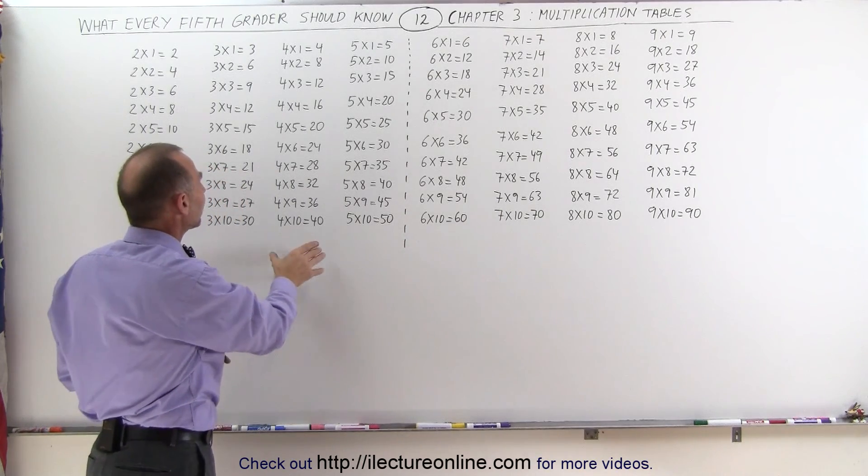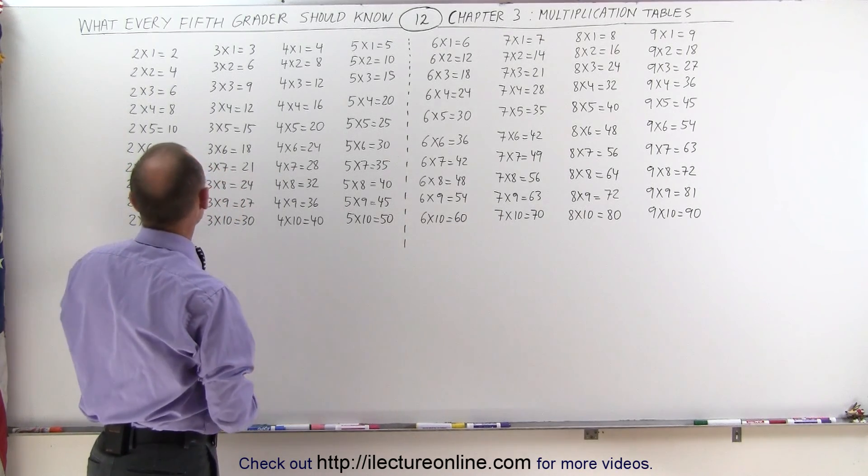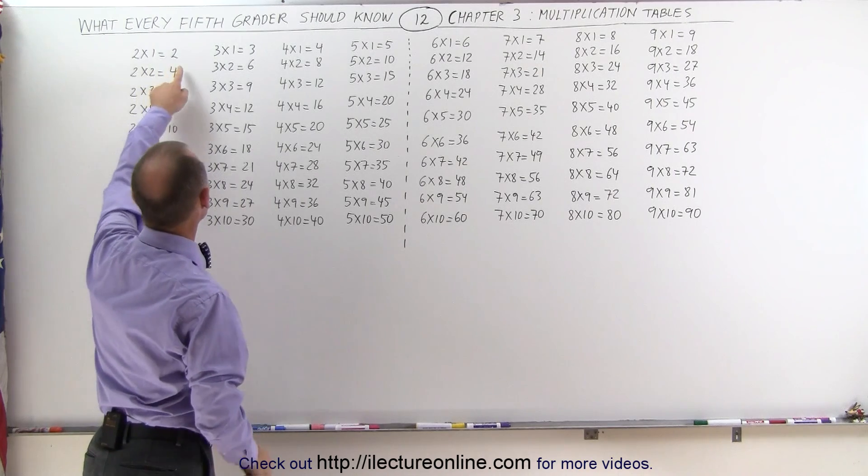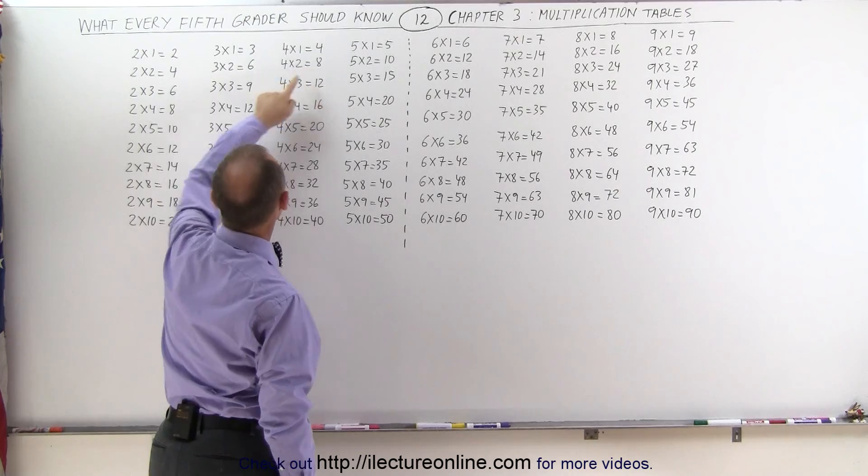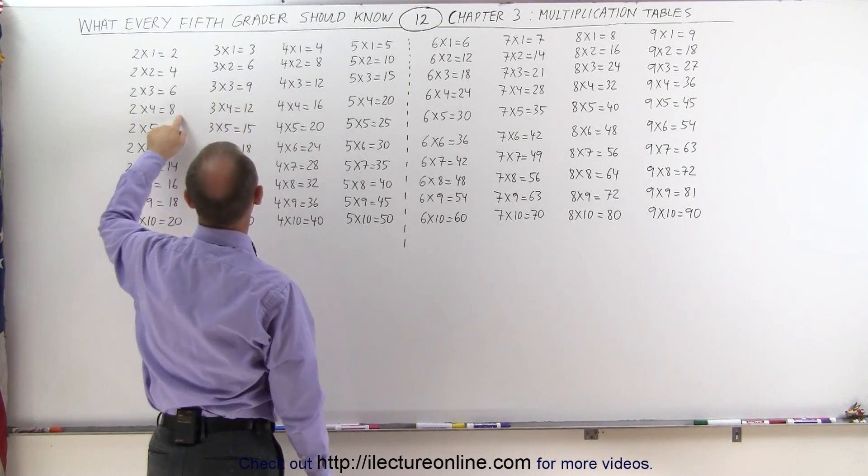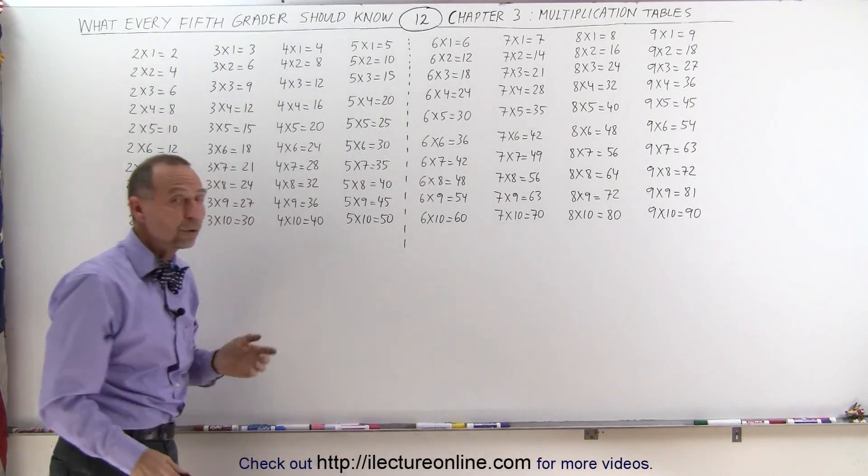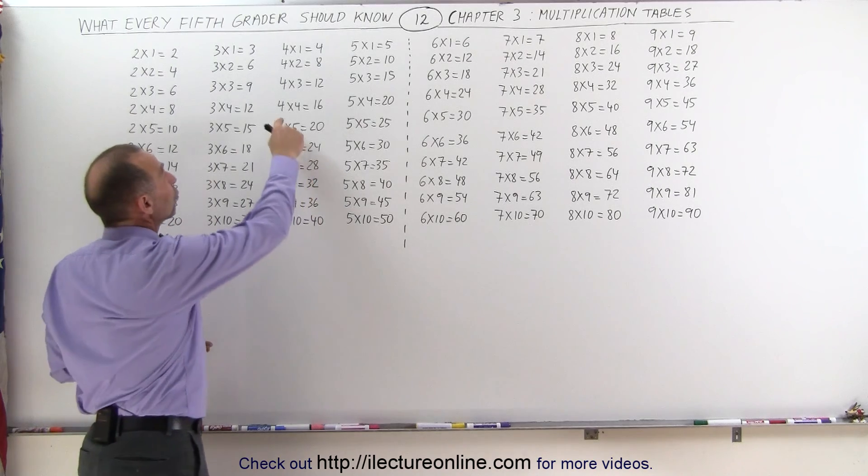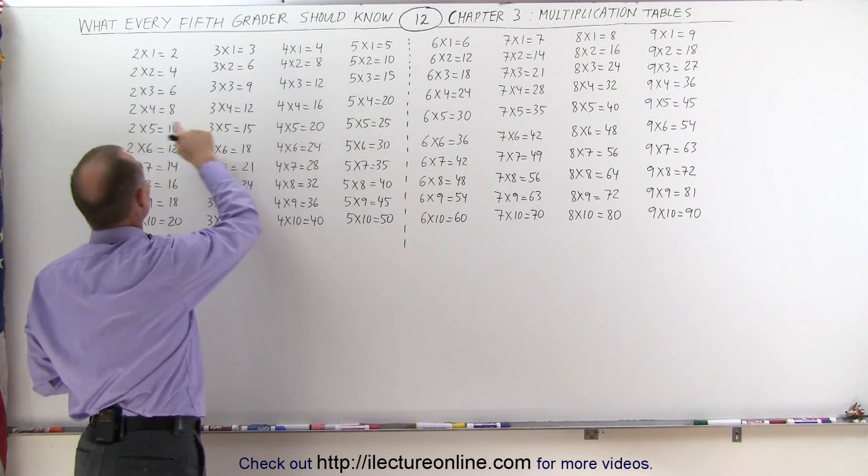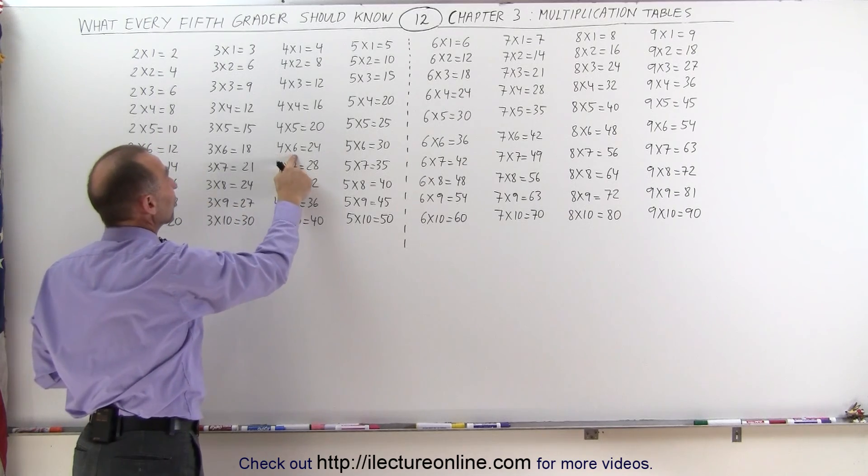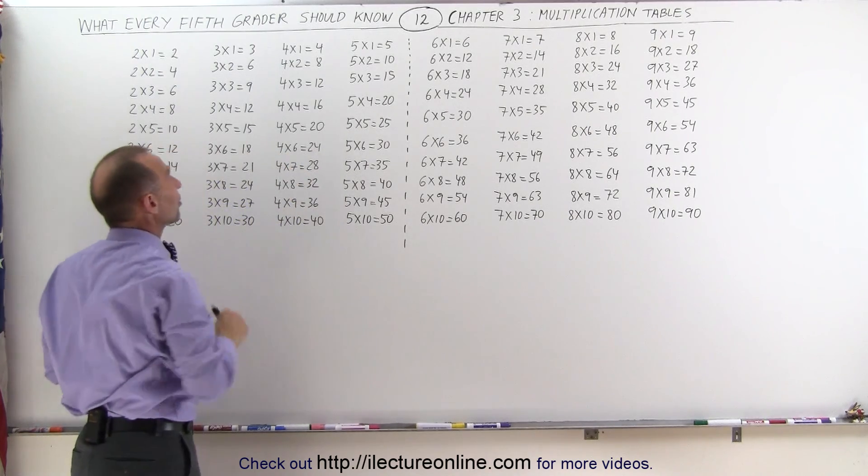And then when we multiply times 4, notice that it's simply double when we multiply times 2. The answer here is 2, the answer here is 4. 4, the answer is 8. 6, the answer is 12. 8, the answer is 16. In other words, 4 times 4 is twice as much as 2 times 4, and 4 times 5 is twice as much as 2 times 5, and 4 times 6 is twice as much as 2 times 6 and so forth.